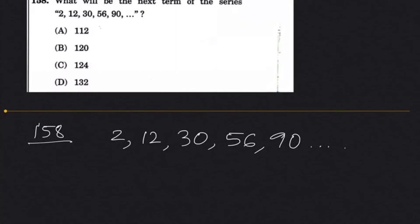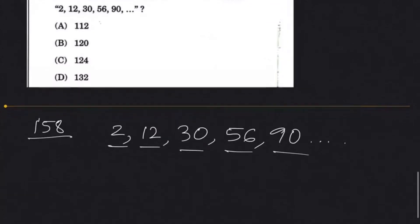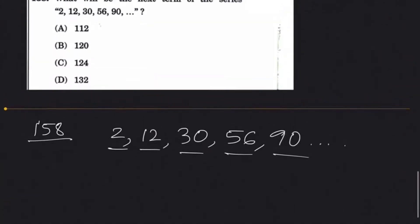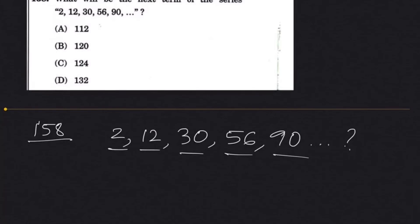Question 158: What will be the next term of the series? 2, 12, 30, 56, 90... If you look at this series — comparing with squares: 1, 4, 9, 16, 25, 36 — and cubes: 1, 9, 27, 64, 125 — try to find a connection.